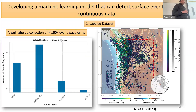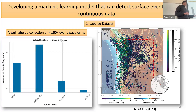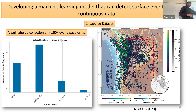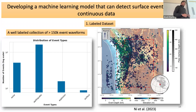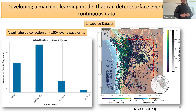The labeled dataset is compiled by my colleague from the PNSN catalog. We have an event catalog containing over 150,000 events distributed across four categories: earthquakes, explosion, noise, and surface events. Earthquakes form the majority. There are about 9,000 surface events. Noise is compiled by selecting windows that arrive before the P arrivals of earthquakes. The events are well distributed geographically and in terms of depth and magnitude.